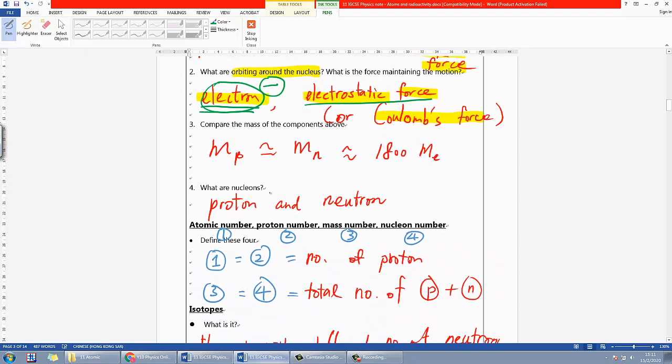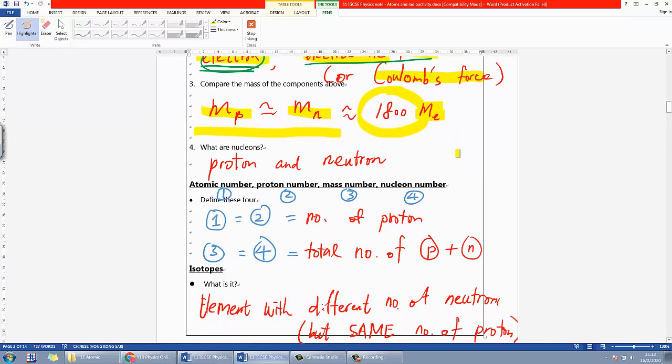For the mass, you'll find that the mass of proton and neutron are almost the same. They're not exactly the same, be careful, but for now in IGCSE you can treat them as the same, one-to-one ratio. If you search on Google for the exact values, they're almost the same. However, electrons are much lighter. If you want to know the ratio, it's around 1,800 times smaller than protons and neutrons. The mass of electrons is so small, so insignificant.